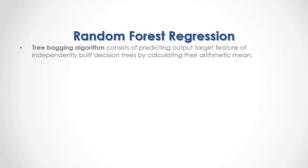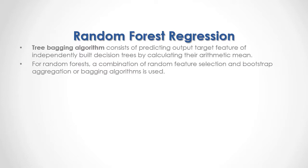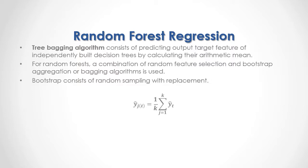Tree bagging algorithm consists of predicting the output target feature of independently built decision trees by calculating their arithmetic mean. For random forest, a combination of random feature selection and bootstrap aggregation or bagging algorithms is used. Bootstrap consists of random sampling with replacement. As a formula, the independently built decision trees' mean output target feature prediction equals 1 divided by k — where k is the number of independently built decision trees — multiplied by the sum from the first to the last of the independently built decision trees' output target feature prediction.